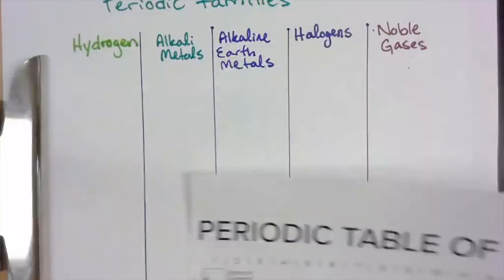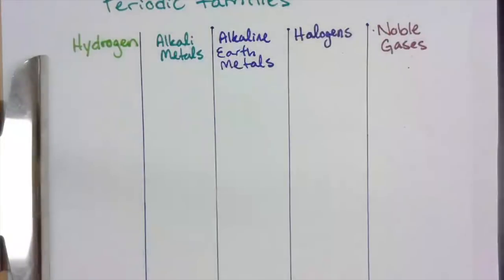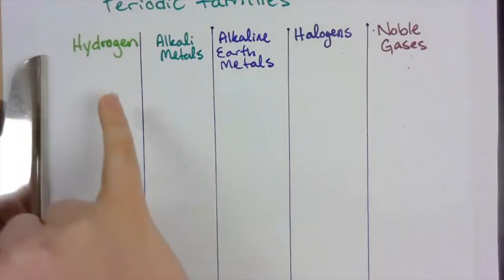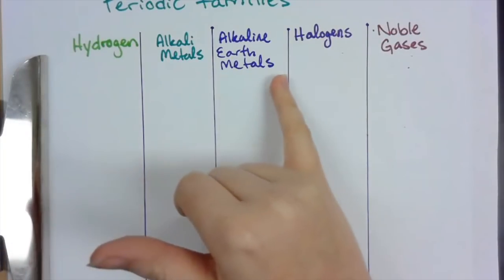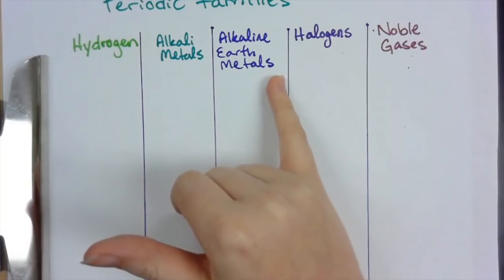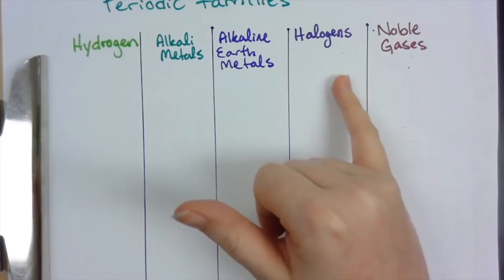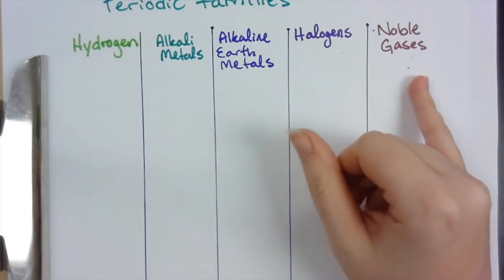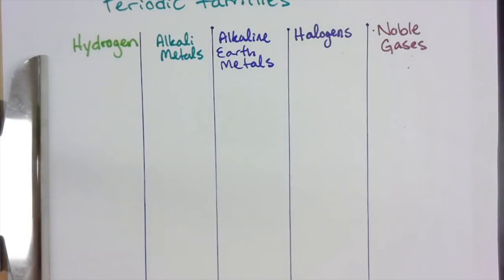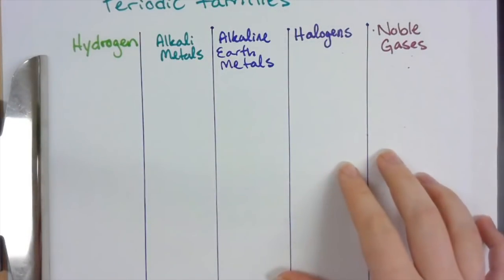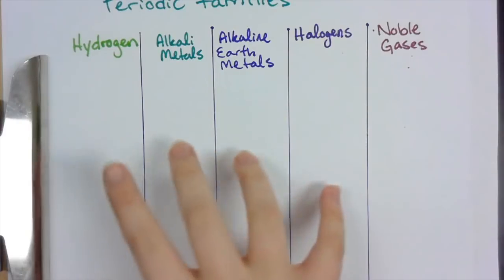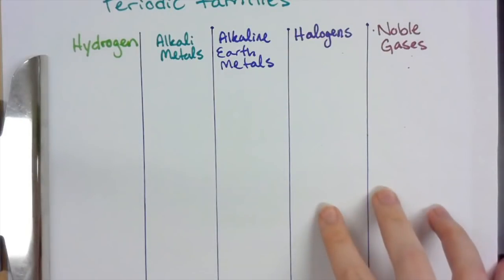There are five main families that I want you to know: hydrogen, the alkali metals, the alkaline earth metals, halogens, and noble gases. There are other families on the periodic table, but these are the big five that you're going to see the most often, so these are the ones I want you to know.